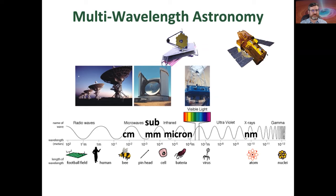Most of my focus today is going to be on four regimes: the centimeter, the submillimeter, the micron, and the nanometer regime — that is, radio, submillimeter, mid-infrared, and X-rays.